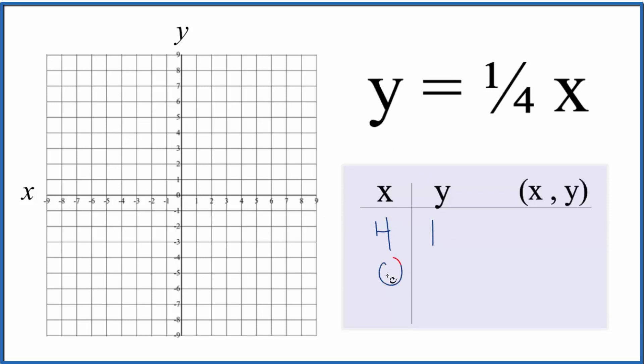Let's put a zero in for x. So one-fourth times zero, that just gives us zero. How about negative four? One-fourth times negative four, that'll just give us a negative one.